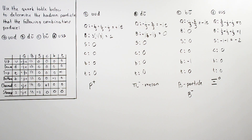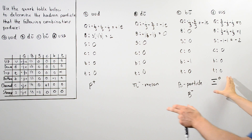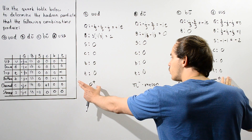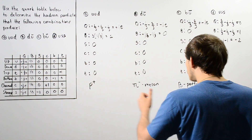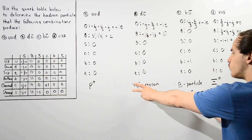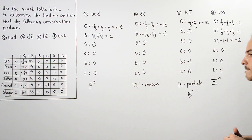So we have two baryon particles and two meson particles as shown.